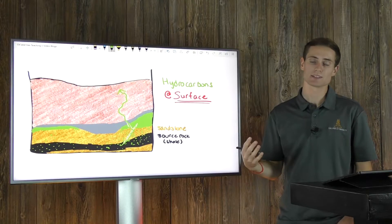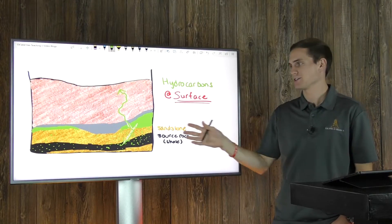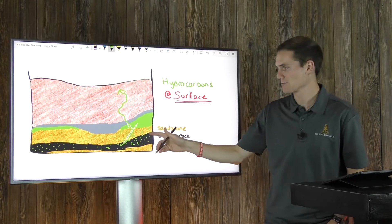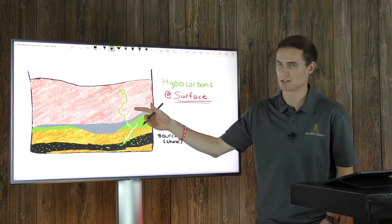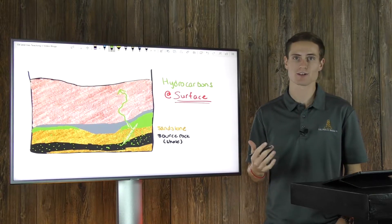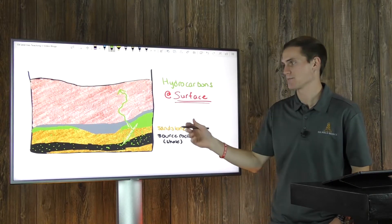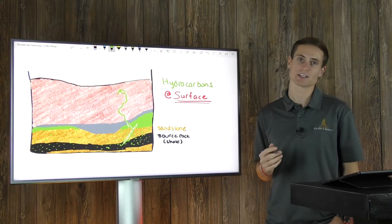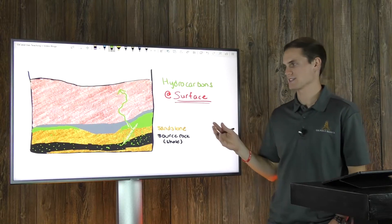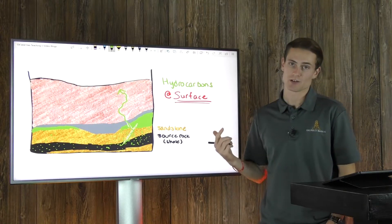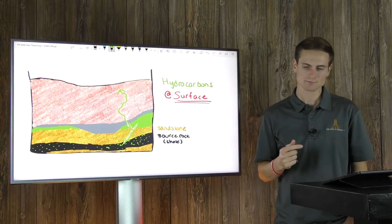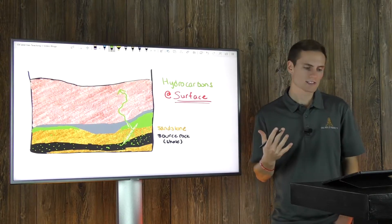Another method could be migration over time. Depending on how deep the formation is, hydrocarbons could travel upwards through the cap rocks — and typically there are multiple shale layers to get through — but if there's any faulting or other feature that helps bypass those barriers, that's a case where hydrocarbons can also make it to surface.